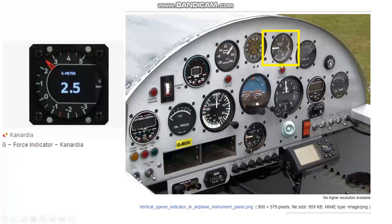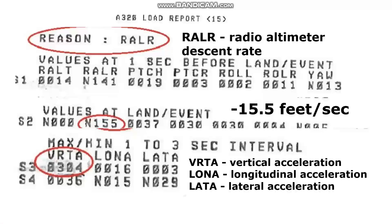For other instruments on other aircraft, there is the G indicator. But on new aircraft, after the aircraft lands with a hard landing, a report is automatically printed out. The name of this record is the Load 15 report.